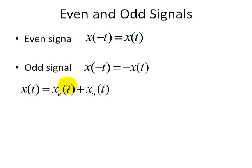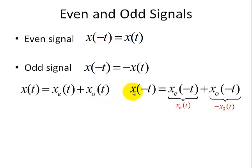Let's explore these properties a little further. We're given x of t composed of a combination of an even signal and an odd signal. Now let's substitute x of t with minus t as the argument. When we do this, we have x of minus t equal to xe of minus t plus x0 of minus t. Now we apply our properties of even and odd signals. We see that xe of minus t is simply equal to xe of t, and x0 of minus t equals minus x0 of t using the definition of an odd signal.